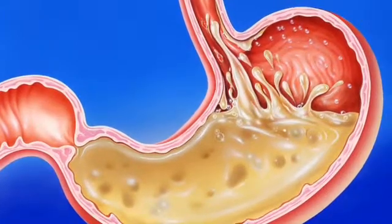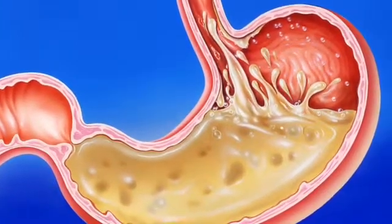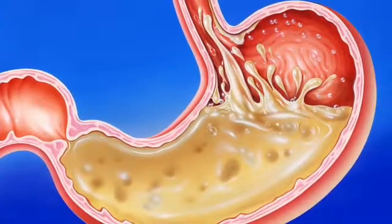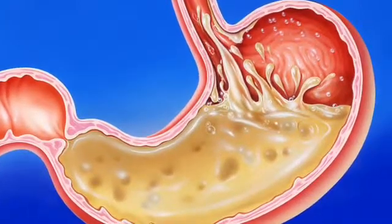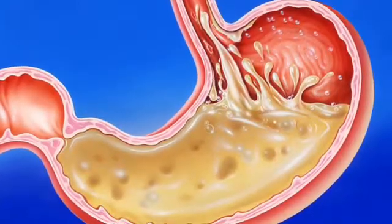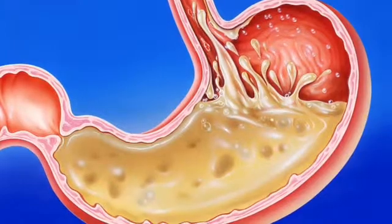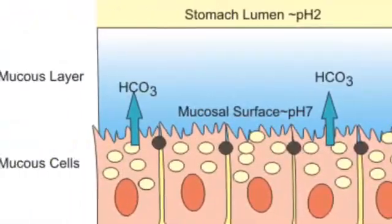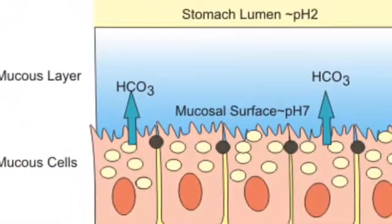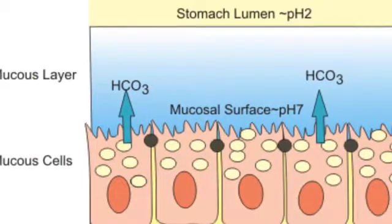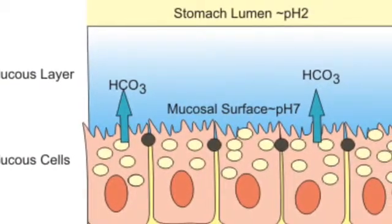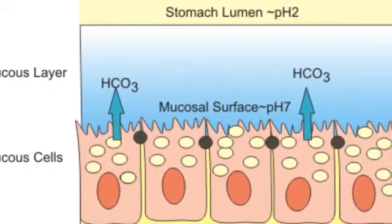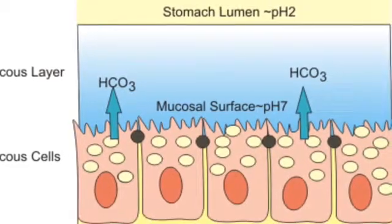The acidic nature of the stomach is the second step in decontaminating food that we eat. Gastric acid is produced by parietal cells. To prevent the stomach from being digested, there is a lining of epithelial cells that secretes a layer of mucus and bicarbonates.